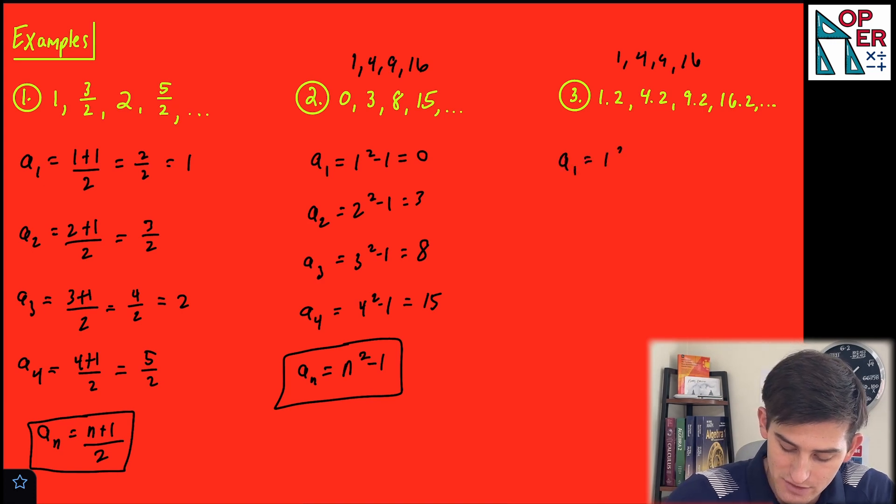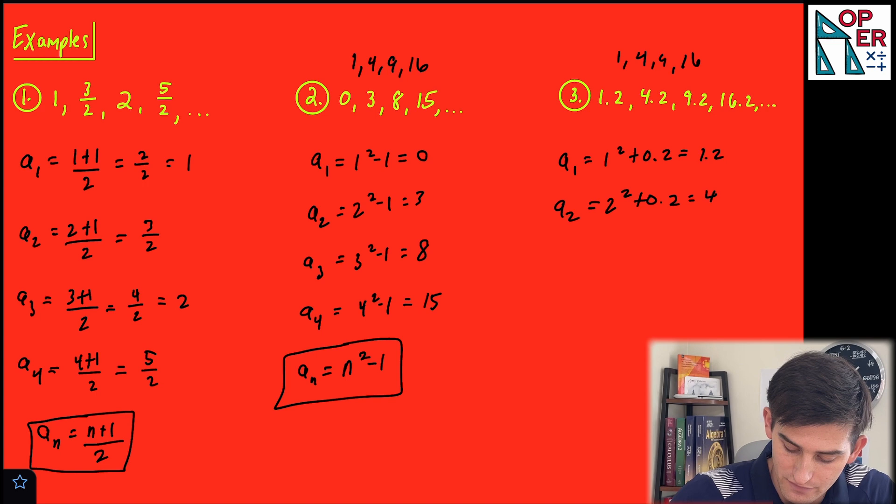So our first term would be 1 squared plus 0.2, so 1.2. Our second term would be 2 squared plus 0.2, so 4.2. Third term would be 3 squared plus 0.2, so 9.2. And our fourth term would be 4 squared plus 0.2, so 16.2.